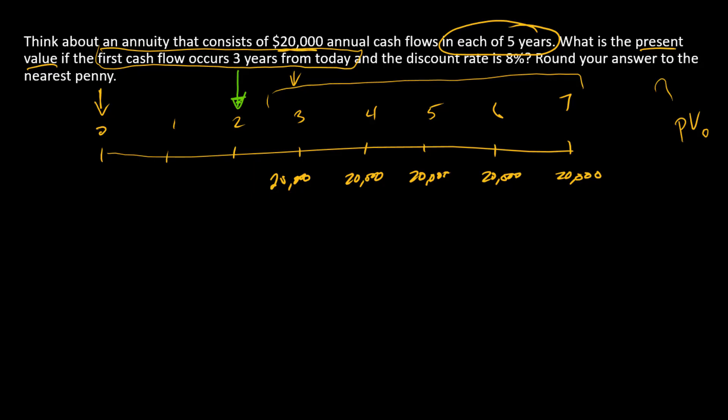We can calculate the present value of an annuity using the formula, which is the cash flow times an annuity factor. That annuity factor needs a discount rate of 8% and an exponent of 5 since there are five periods.